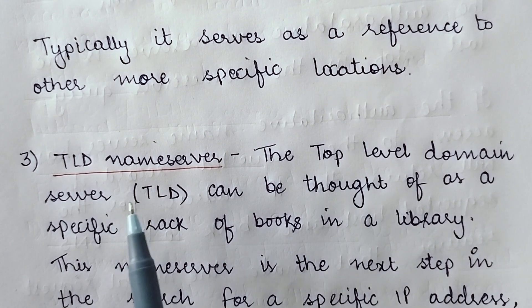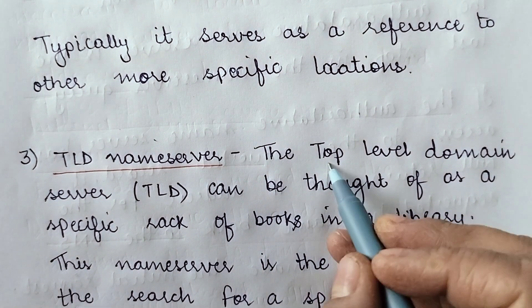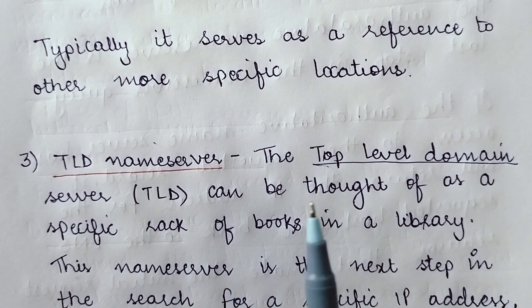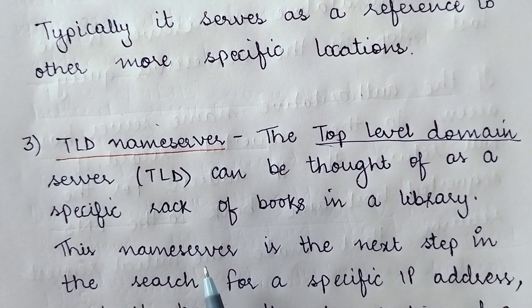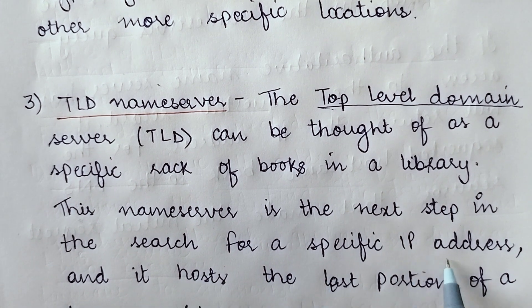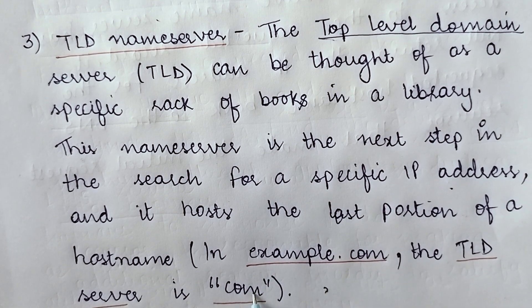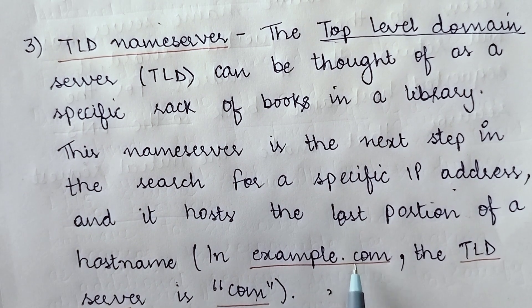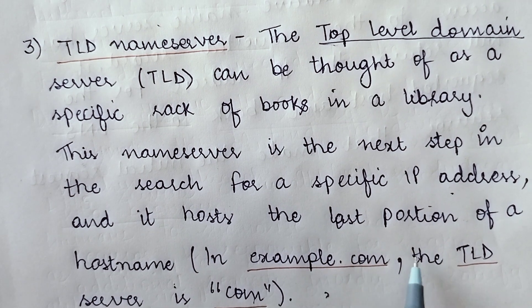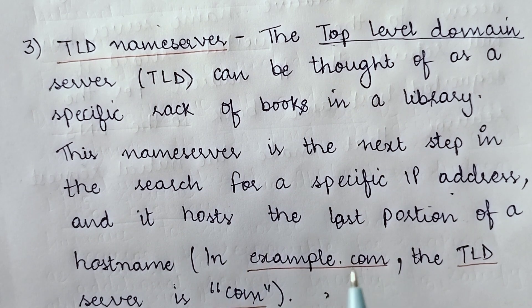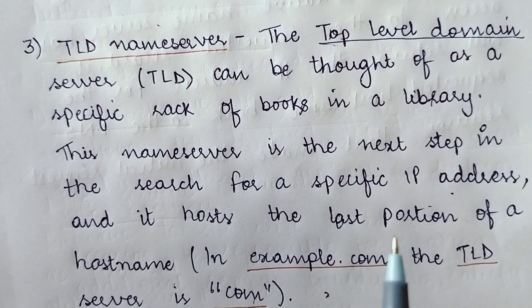The third DNS server is the TLD name server — TLD standing for top level domain. The TLD name server can be thought of as a specific rack of books in a library. It is the next step in the search for a specific IP address and it hosts the last portion of a host name. For example, in example.com the TLD server is .com; in example.edu it is .edu; in example.in it is .in. So it searches for a specific IP address and hosts the last portion of the host name.